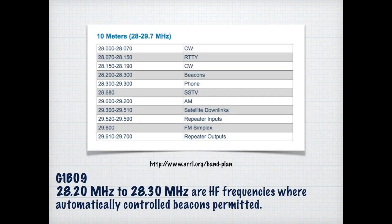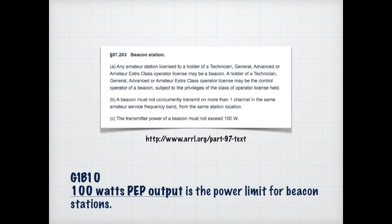Regarding beacons, there are certain frequencies where they are permitted. A couple that they expect us to know: 28.2 megahertz to 28.3 megahertz are HF frequencies where automatically controlled beacons are permitted, and this can be found on the band plan page of the ARRL website. Exam question G1B10 is actually a snippet from Part 97 of the FCC rules, which states clearly that 100 watts peak envelope power output is the power limit for a beacon station.